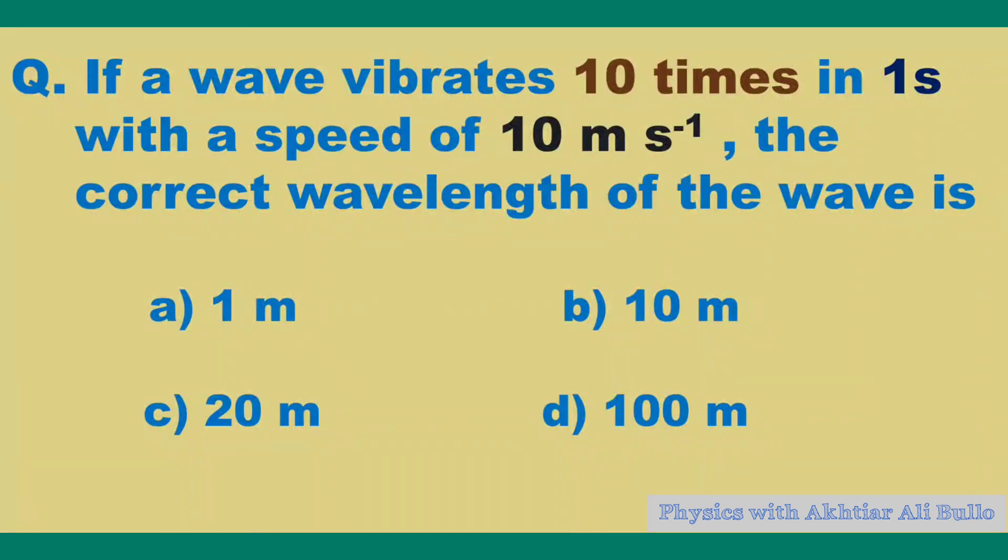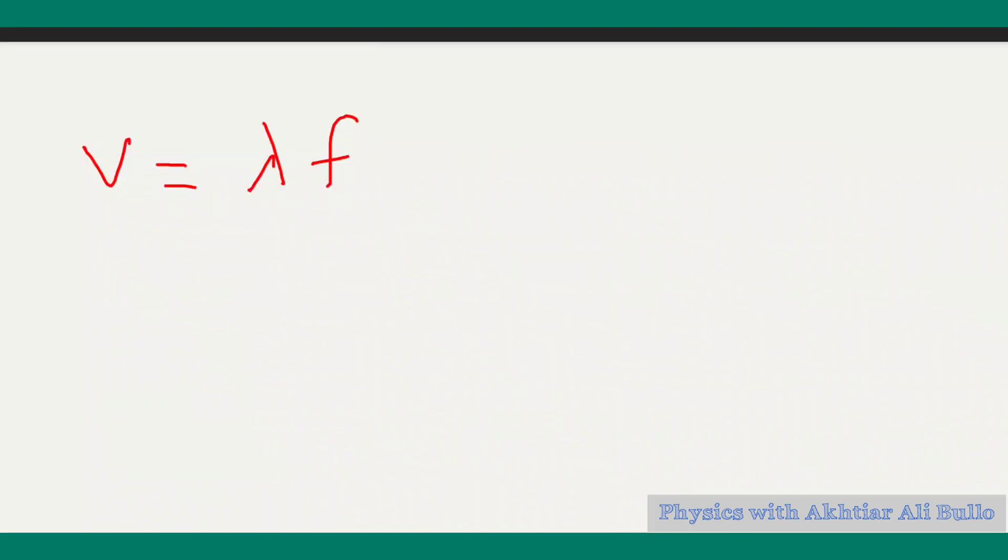The formula for wave velocity is v = λf. To calculate the wavelength, λ = v/f.